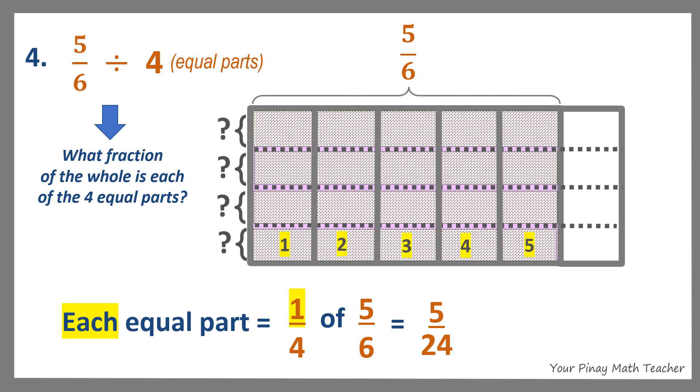So 5 sixths divided by 4 is equal to 5 over 24. You can also get 5 over 24 by getting the value of 1 fourth of 5 sixths, which is just the same as 1 fourth times 5 sixths. You multiply 1 by 5 and you also multiply 4 by 6. So you will get 5 over 24.